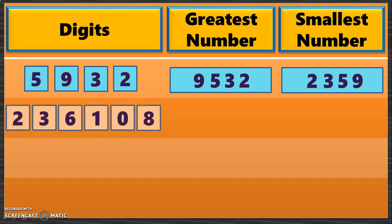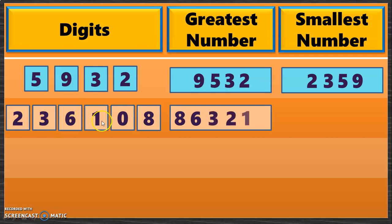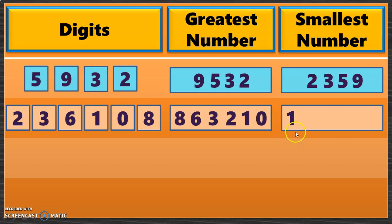Let us move to the next question with 6 digits. To find the greatest 6-digit number, arrange from big to small: 8, 6, 3, 2, 1, 0 — giving 8,63,210. For the smallest 6-digit number, 1 is written first because you cannot begin with 0. Then 0 is placed next, followed by the remaining digits from small to big: 2, 3, 6, 8. So the smallest number is 1,02,368.